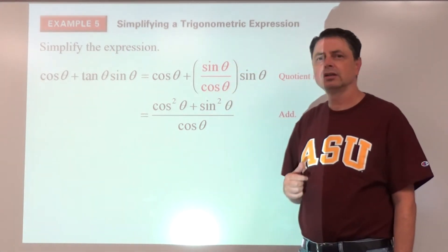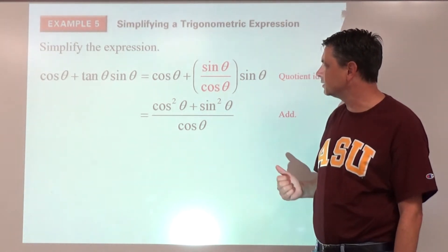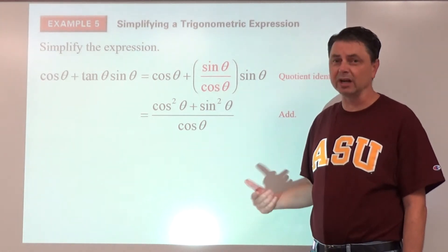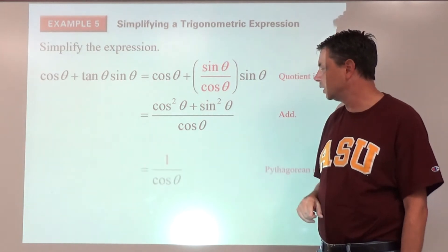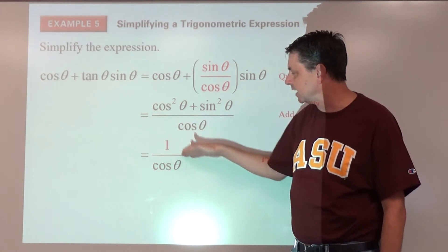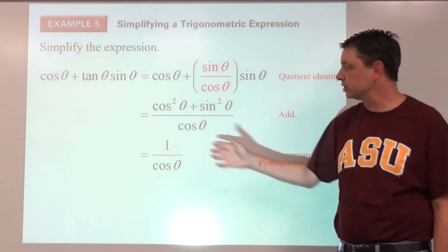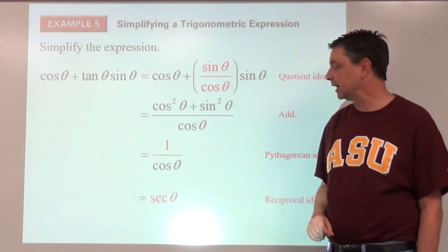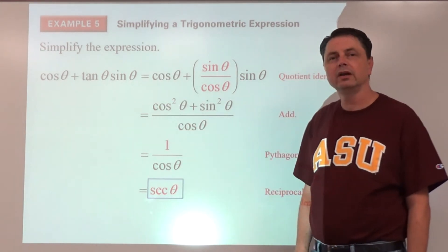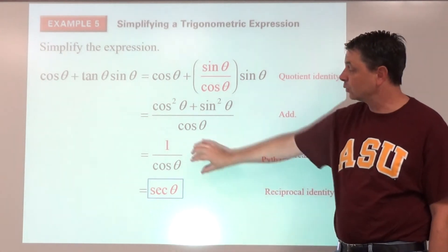Sine squared theta plus cosine squared theta in the numerator is our primary Pythagorean identity — that equals one. So the fraction becomes one over cosine theta. By the reciprocal identity, one over cosine theta is secant theta. We simplified the entire expression down to just one function — secant theta — and it's not even a fraction.